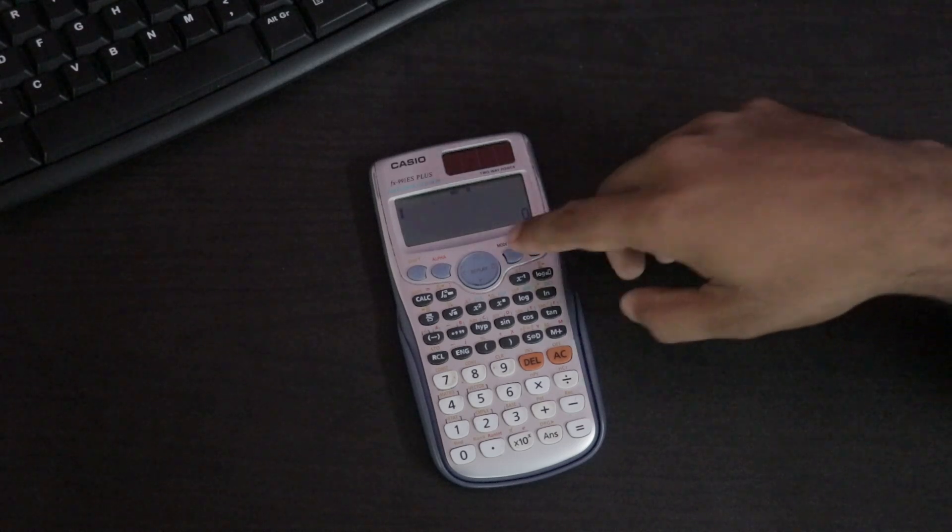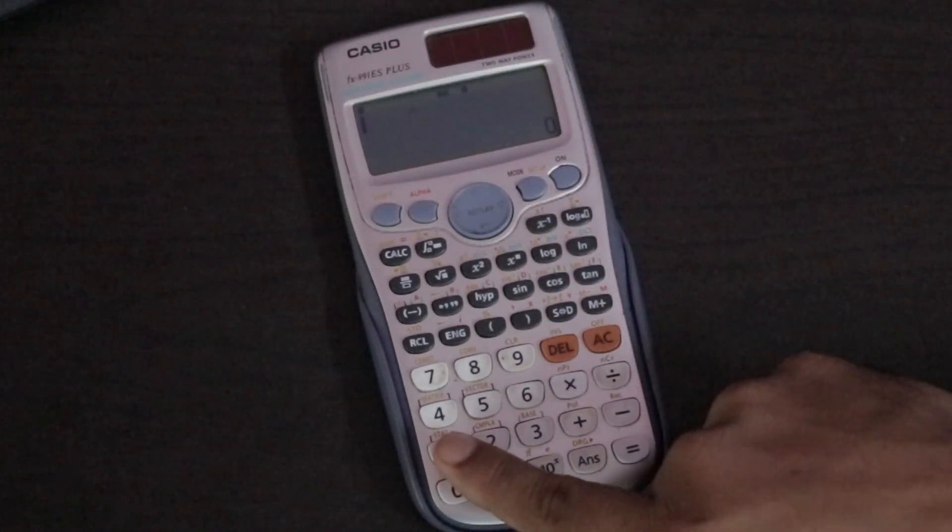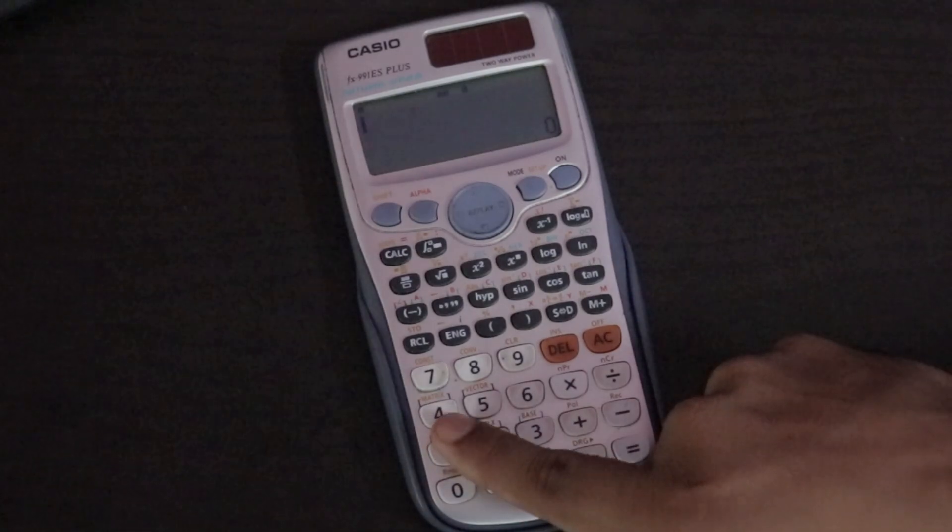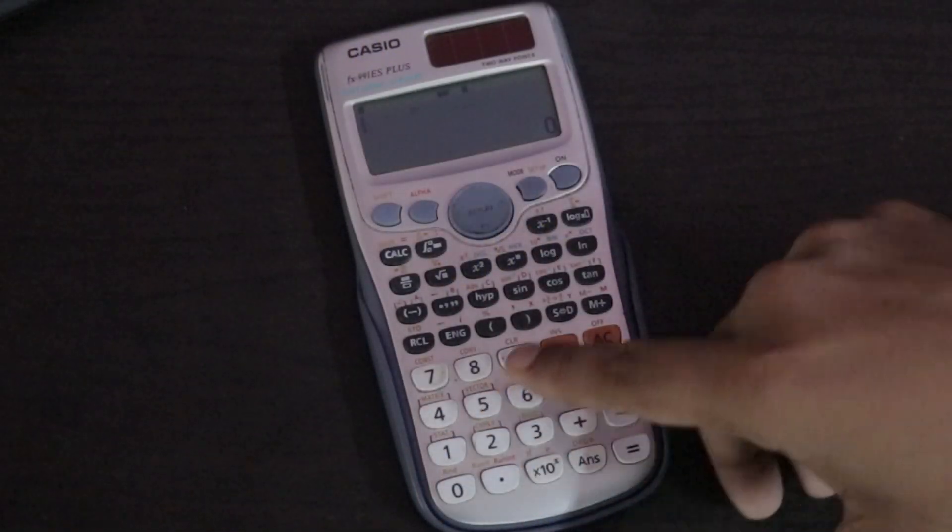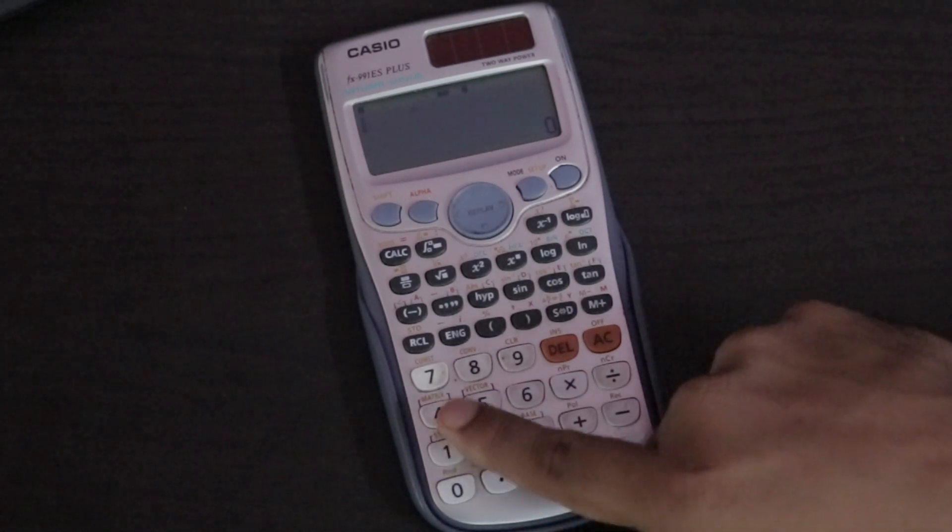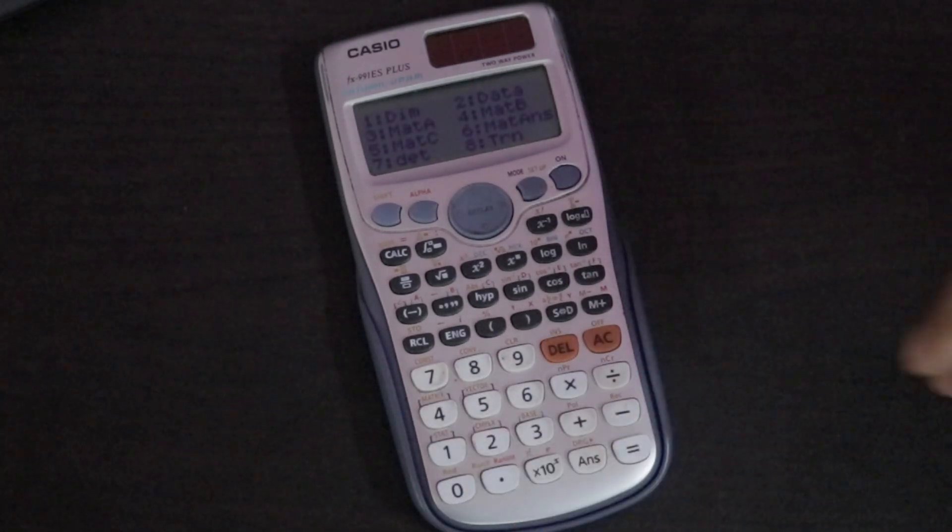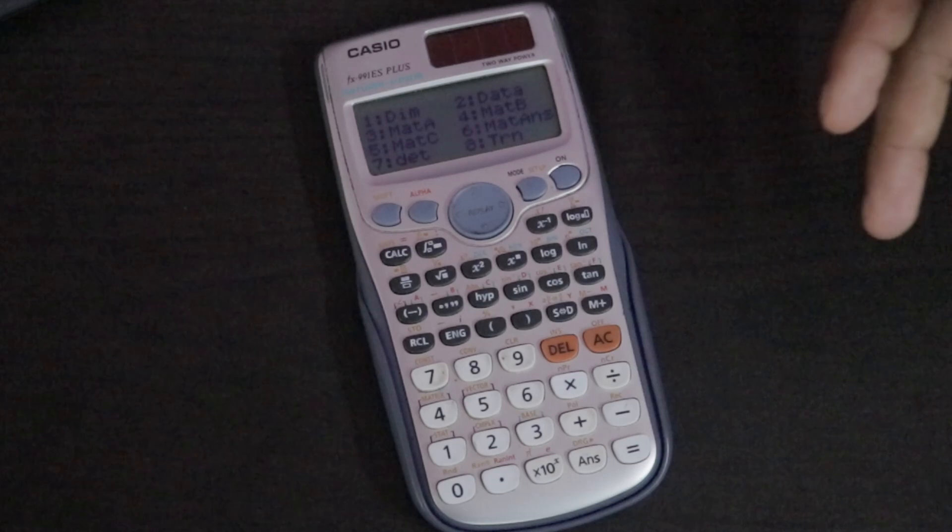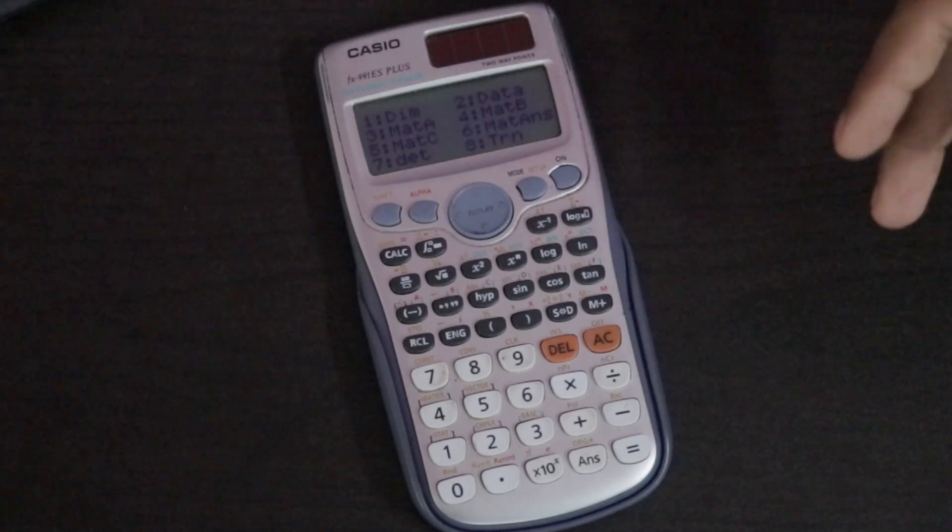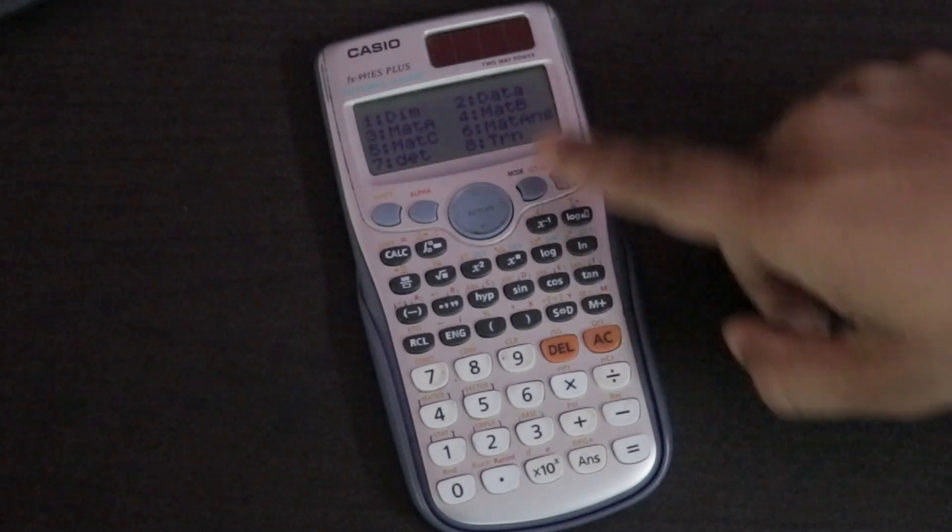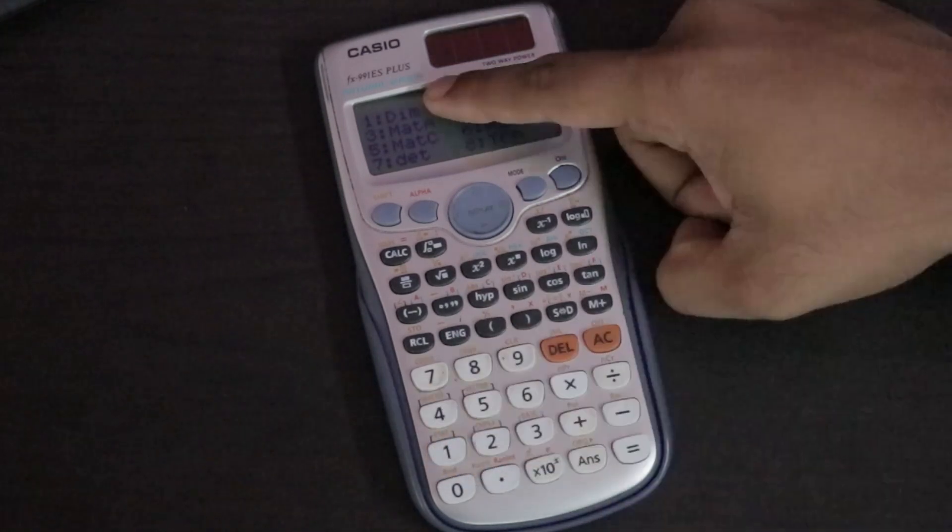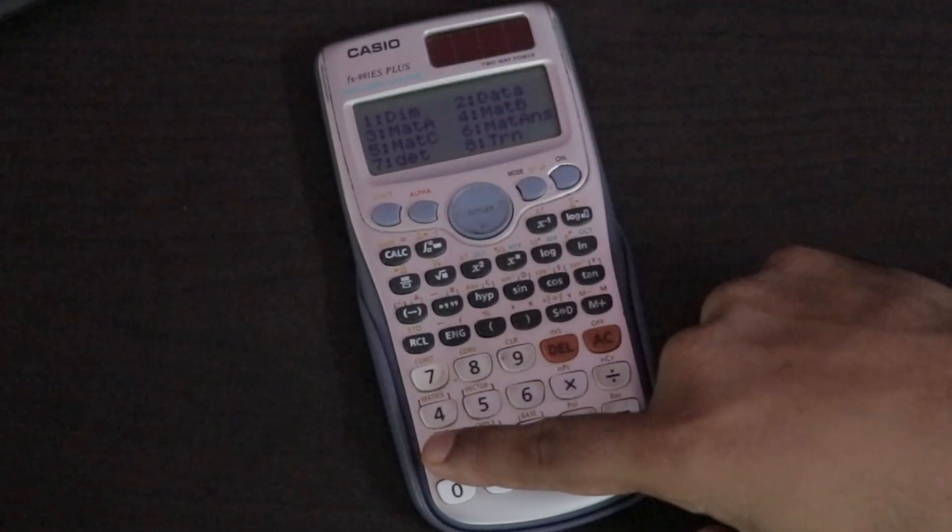For doing that we just click on shift. There is a fourth option above that is written as matrix. In some calculators this may vary. You just click on 4. Then we have to choose the dimension of the matrix. Because we have a 3 by 3 matrix, we click on matrix dimension.